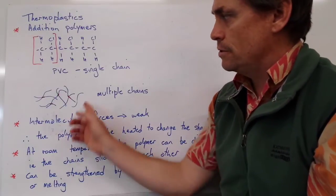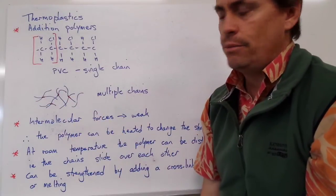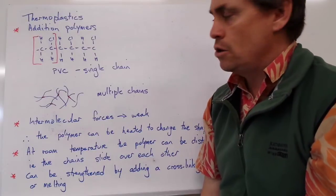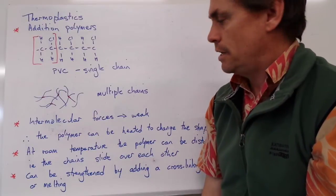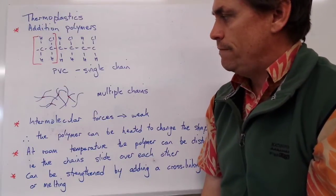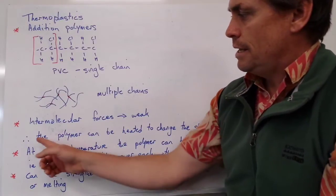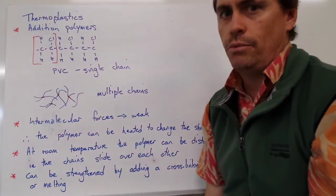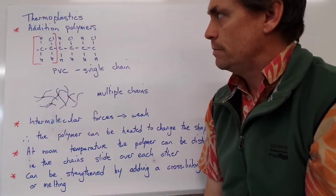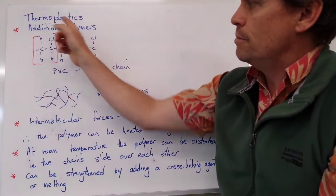Because those interactions are weak, we expect this type of polymer to have a low melting point and low tensile strength. As we heat it up, we can change the shape of that molecule. Hence the term thermoplastic.